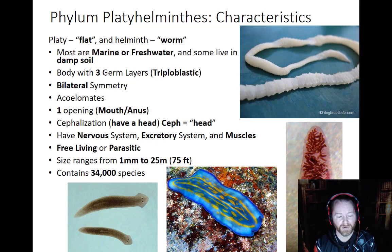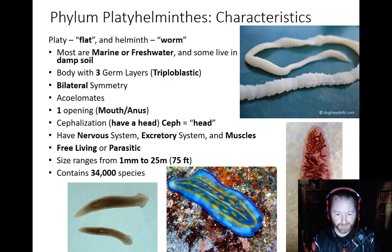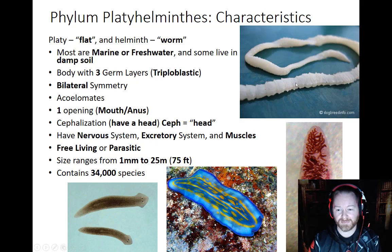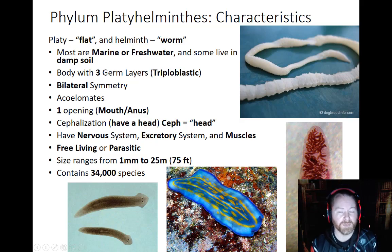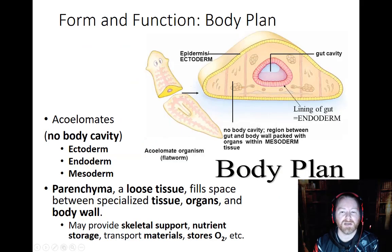There are over 34,000 species that we know of today. As you can see on screen, here are some flatworms — and here are some more. It's a really pretty flatworm. Flatworms are a pretty diverse group.